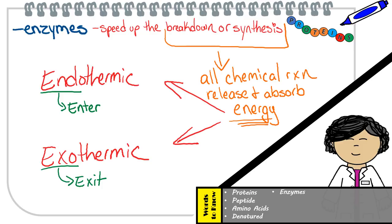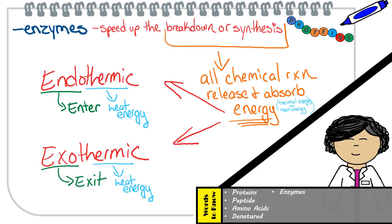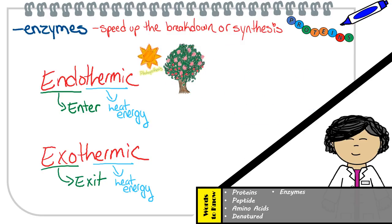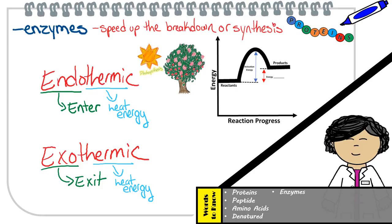The prefix endo means enter, exo means exit, and thermic refers to thermal energy, also known as heat energy. Endothermic would mean heat energy entering the reaction, as opposed to exothermic, in which heat energy exits the reaction. Plants absorb energy from the sun and store some of that energy in carbohydrates. Take a look at this graph — notice the energy of the products is higher than the reactants, meaning that additional energy was absorbed into the carbohydrates, which are the products.